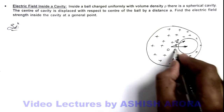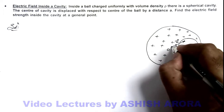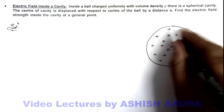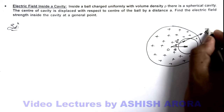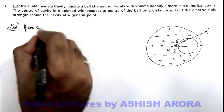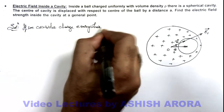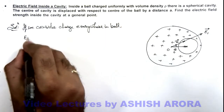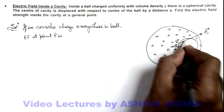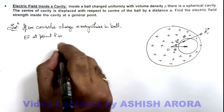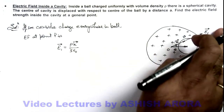Here, a is the displacement of the cavity center from the ball center. If this position is represented by vector x with respect to the ball center, and we assume charge is present everywhere in the ball, the electric field at point P can be written as E1. So E1 vector equals ρx / 3ε₀, since the direction of E1 is along x vector.